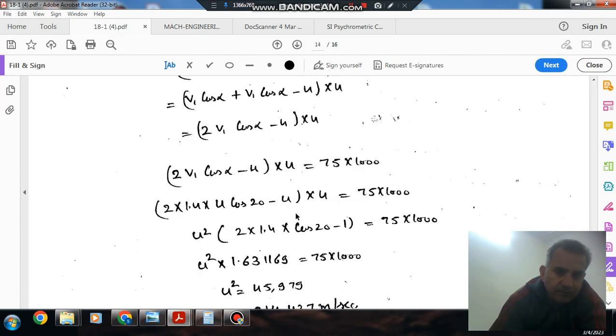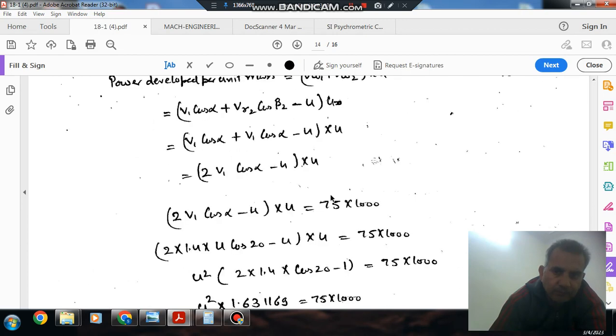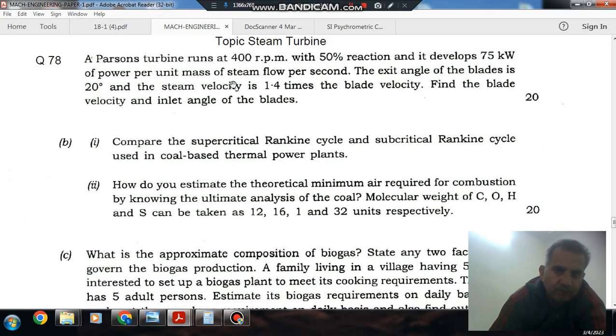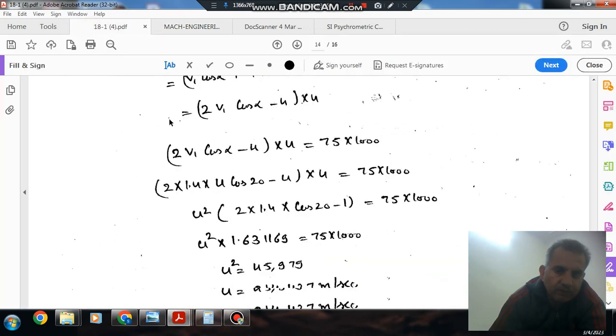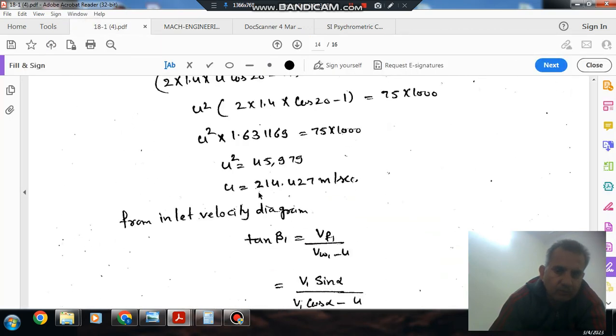Putting these values into the power equation where power is 75 kilowatts, we can solve for U and find the blade velocity.